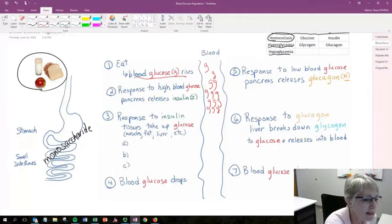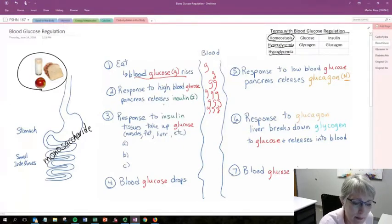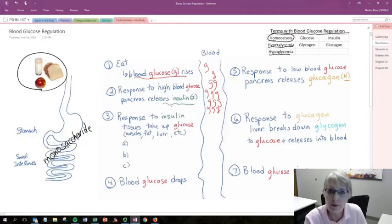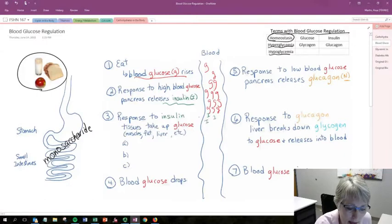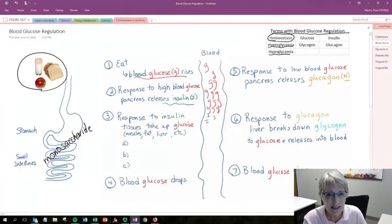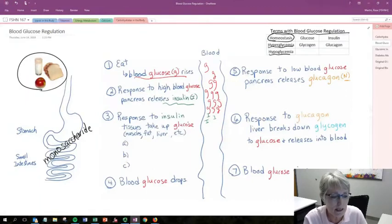In response to that, what we'll have is the pancreas of the body, where we produce insulin, will release that insulin into the blood. So we'll add some I's to our blood stream here. So we've got a rise in blood glucose that leads to the pancreas releasing insulin.